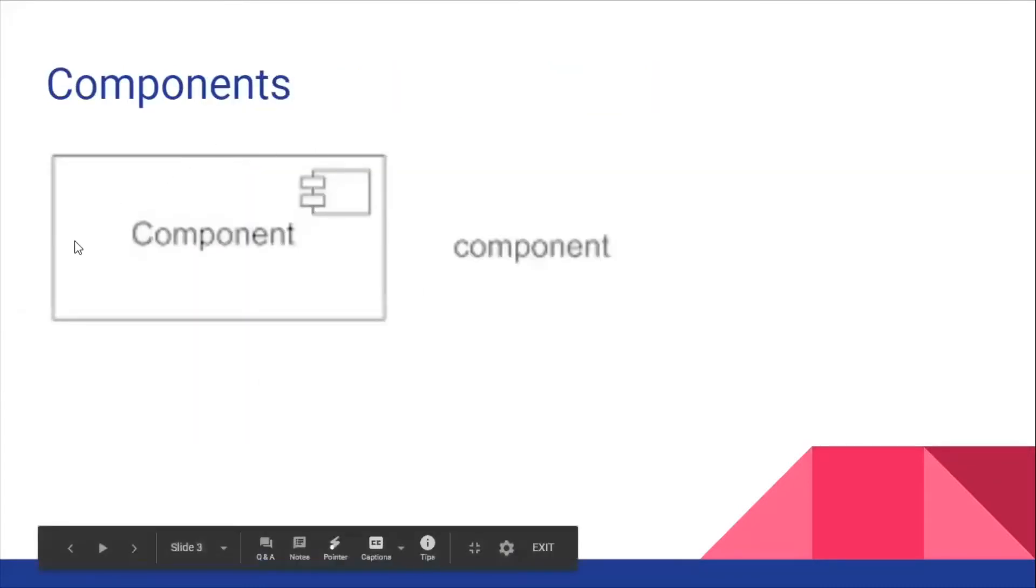The most important part of the UML component diagram is, of course, the component, which is often referenced as a box with some text in it. This can be anything that gives or receives information. So this can be a customer, it can be a database, it can even be a security check.